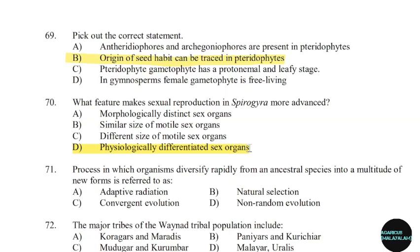71st question: Process in which organisms diversify rapidly from an ancestor species into a multitude of new forms is referred to as. Correct answer: Option A — Adaptive radiation.